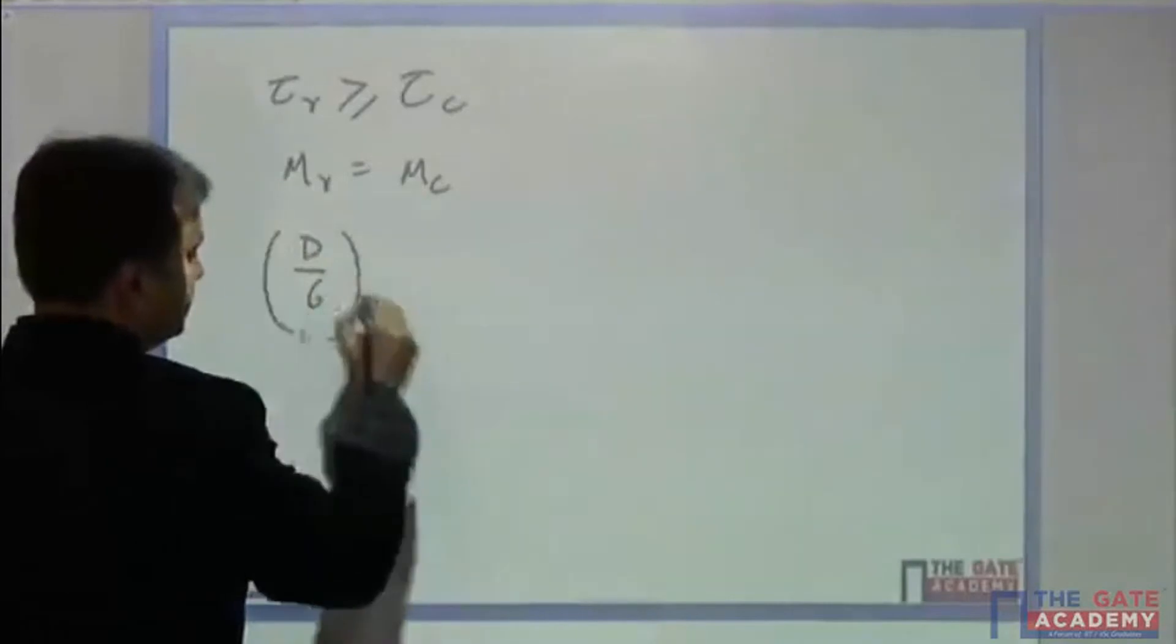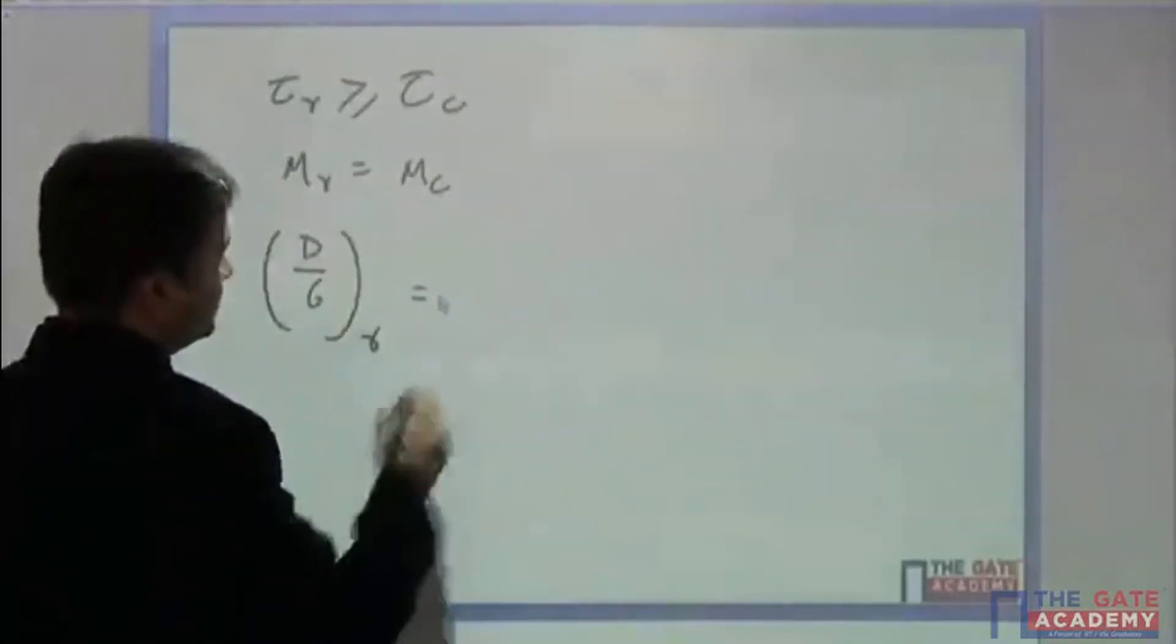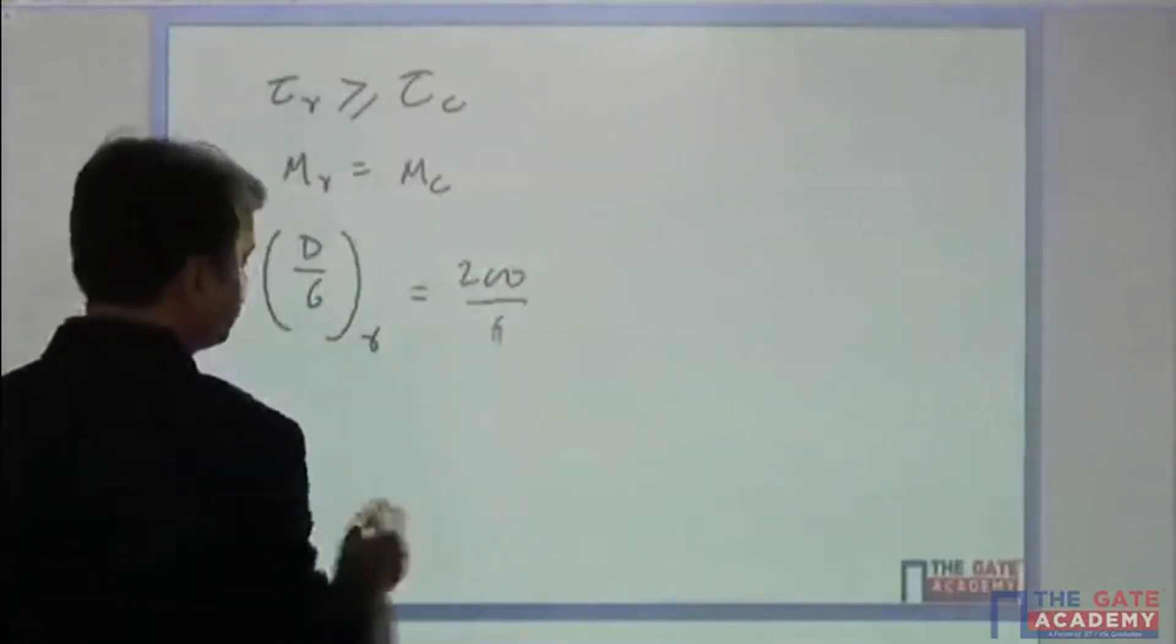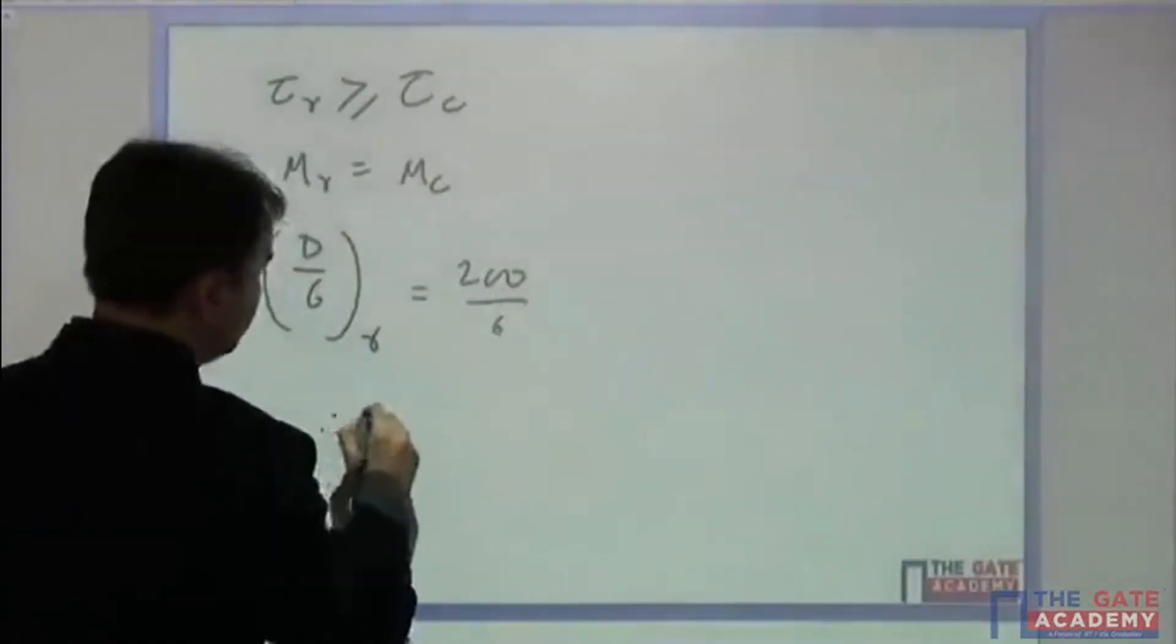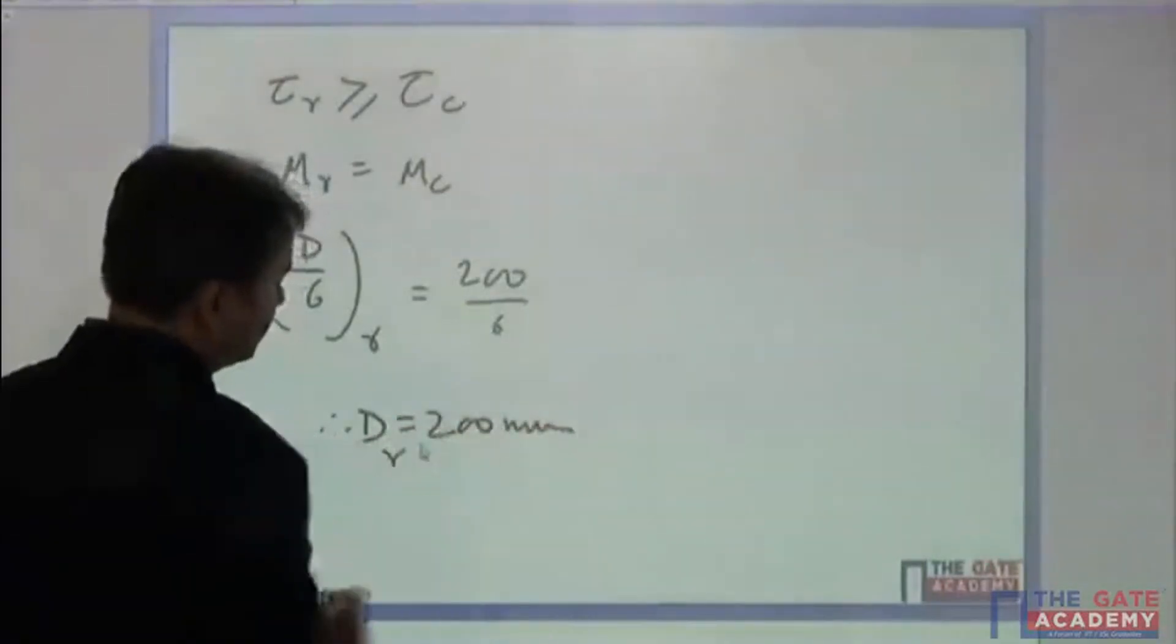We are talking about the riser here. What is mc? It is 200 by 6. From here we get that d is equal to 200mm.